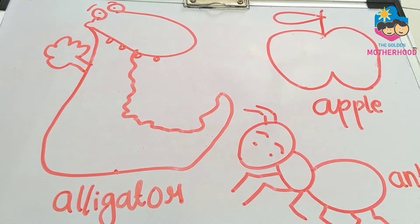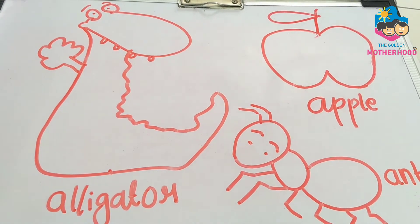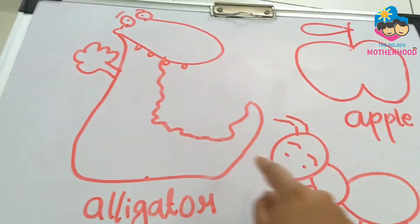Here, I will show you some pictures which start with the letter A. A for apple, A for ant, A for alligator.